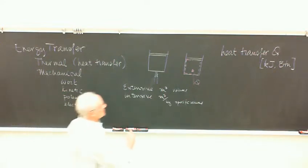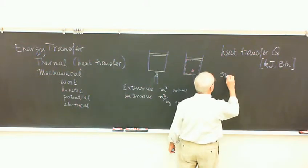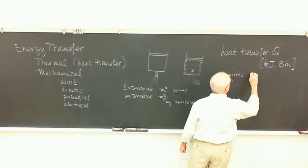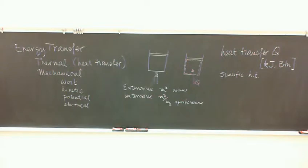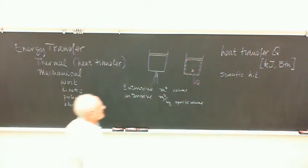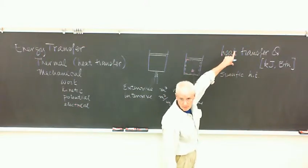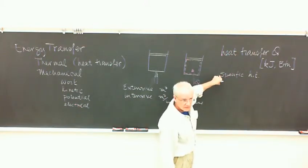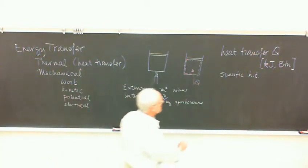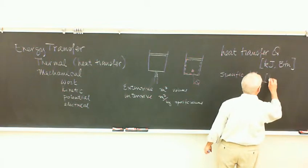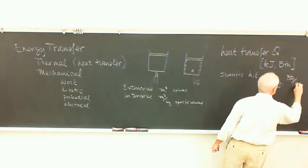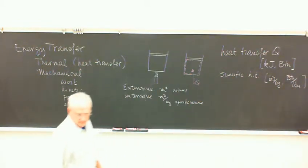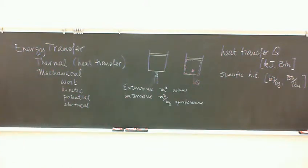We can do the same thing with heat transfer. The specific heat transfer is the amount of heat transfer on a per-mass basis. Capital Q is the total heat transfer to the system no matter how big it is. The specific heat transfer is the amount per unit mass of the system, and would have units of kilojoules per kilogram or BTUs per pound-mass.